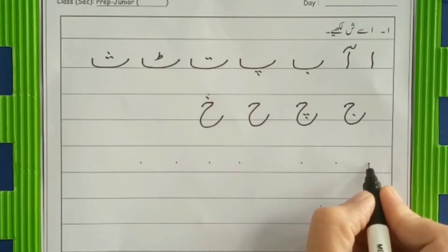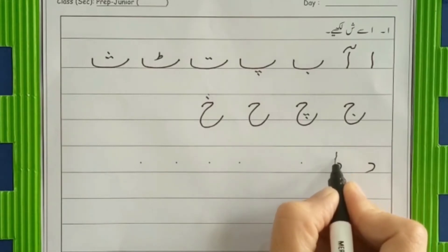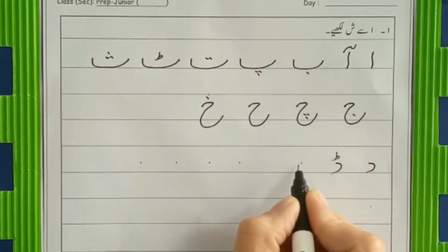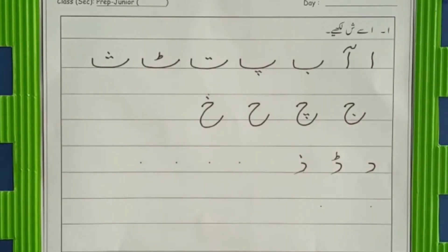Now it's time to do dal family. Make a curve and go slant. Dal. Same with dal, put topi on it. Then zal. Again same like dal and put dot on it. Dal, dal, zal.